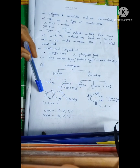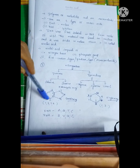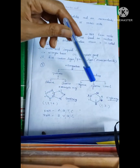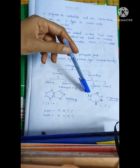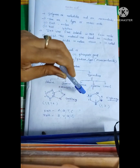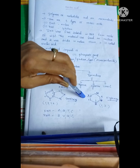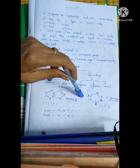In this heterocyclic ring structure of purines, we have nitrogens at the 1st, 3rd, 7th, and 9th positions. In pyrimidines, nitrogens are at the 1st and 3rd positions.